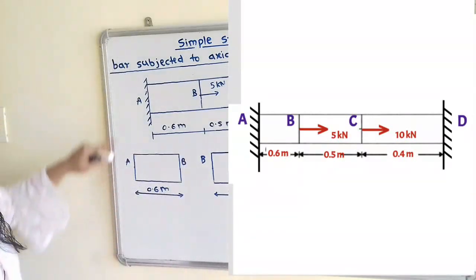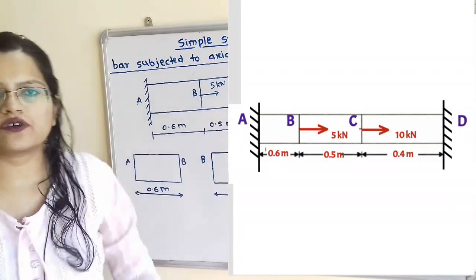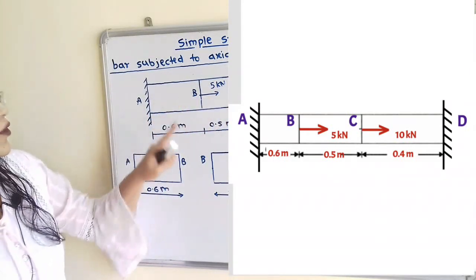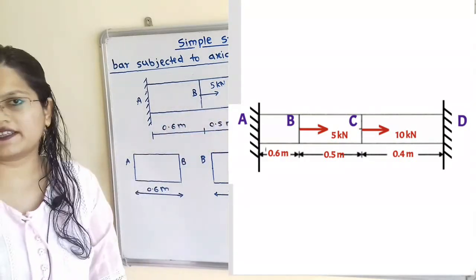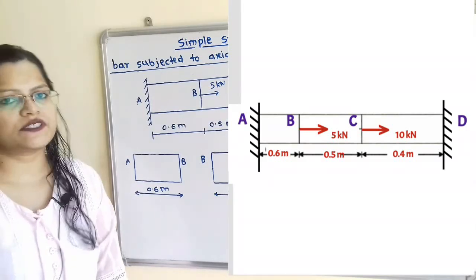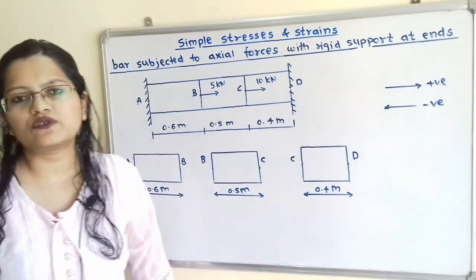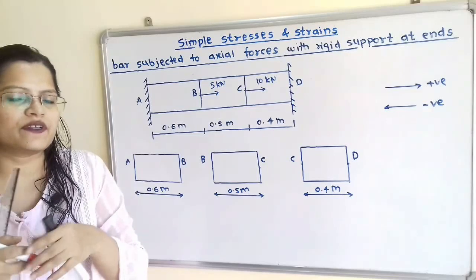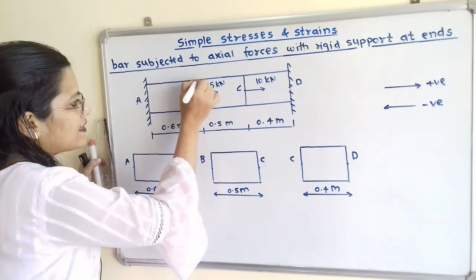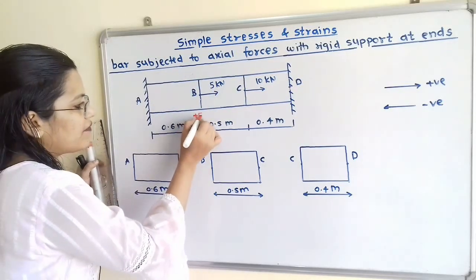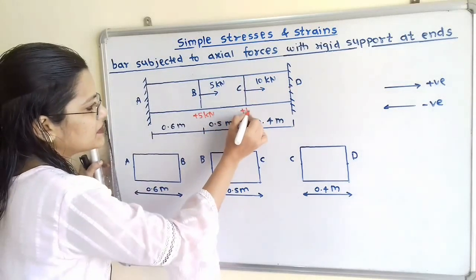If we observe the diagram, at point A this end is fixed, and at point D this end is also fixed. At points B and C, 5 kilo Newton and 10 kilo Newton forces are acting towards the right hand side. Forces towards the right hand side we show with positive sign, and forces towards the left hand side with negative sign. So the 5 kilo Newton force is plus 5 kN and the 10 kilo Newton force is plus 10 kN.